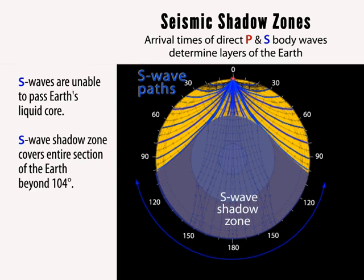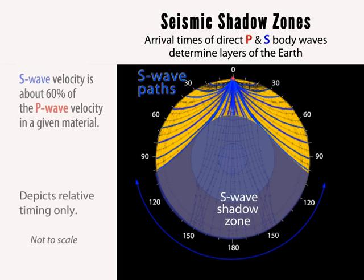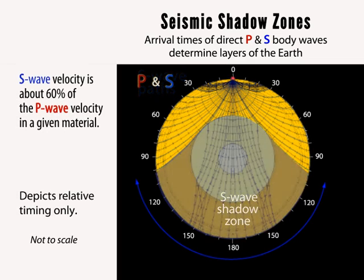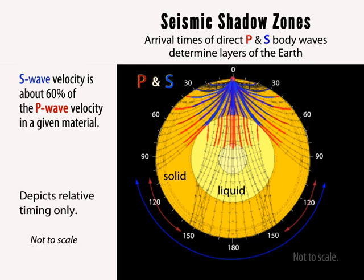It was this lack of S wave arrivals and recognition of the slowing of the P wave velocity that caught the attention of seismologists in 1910. By understanding how energy is refracted by different materials and pressures, it enabled them to deduce a liquid outer core.